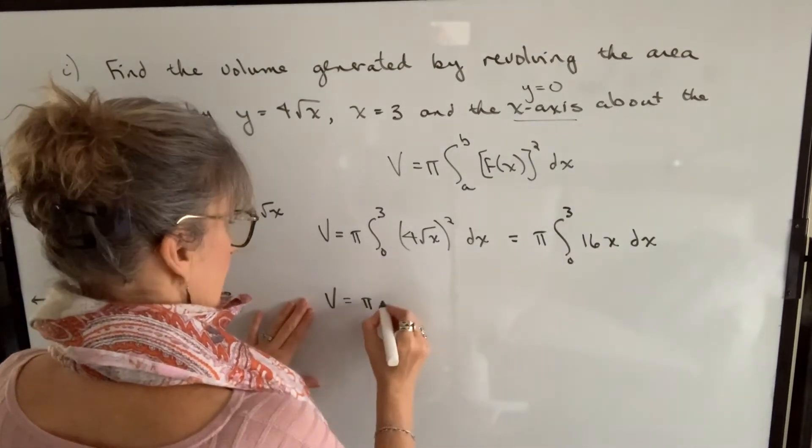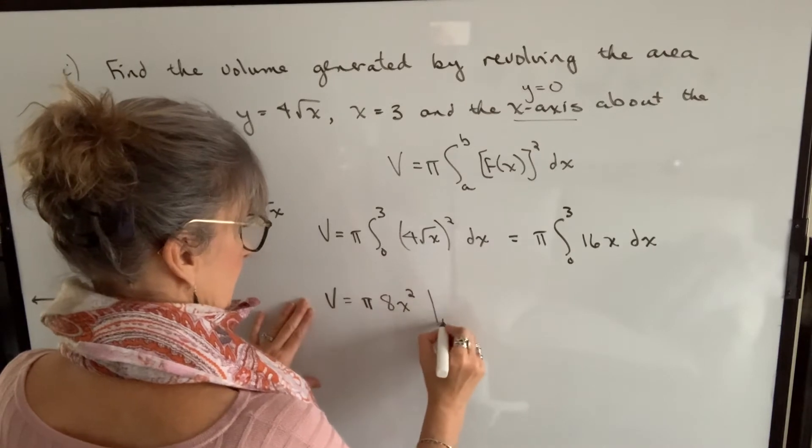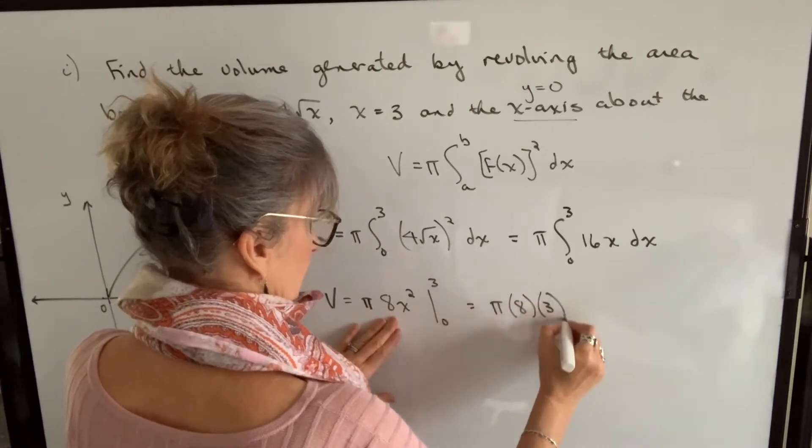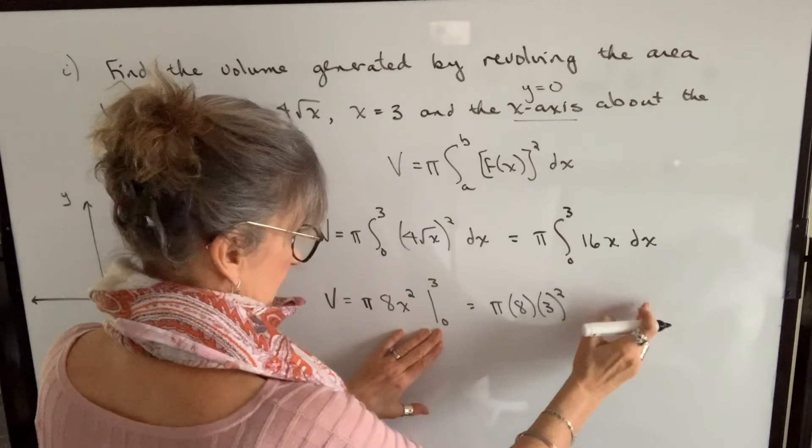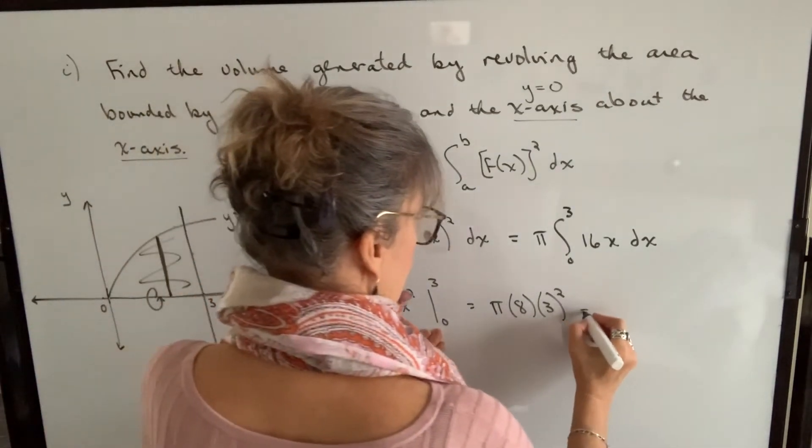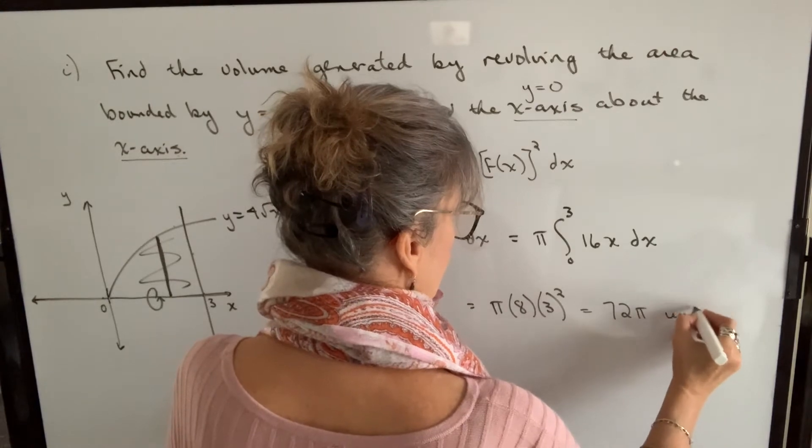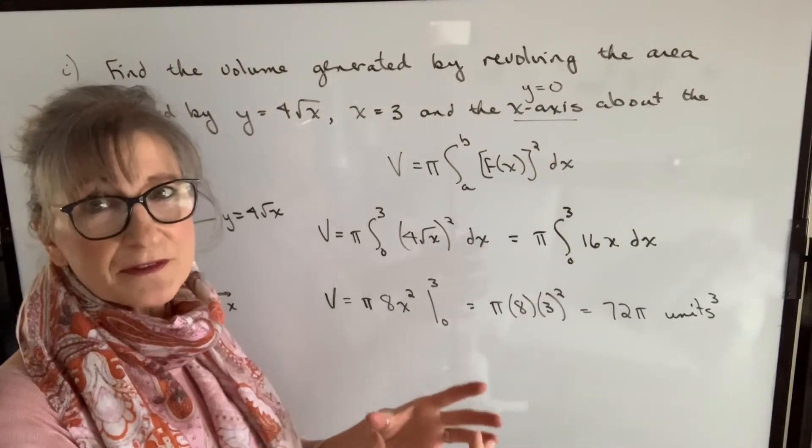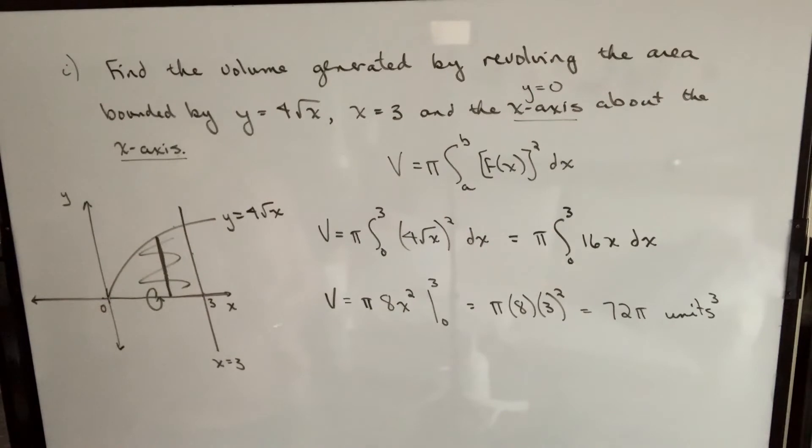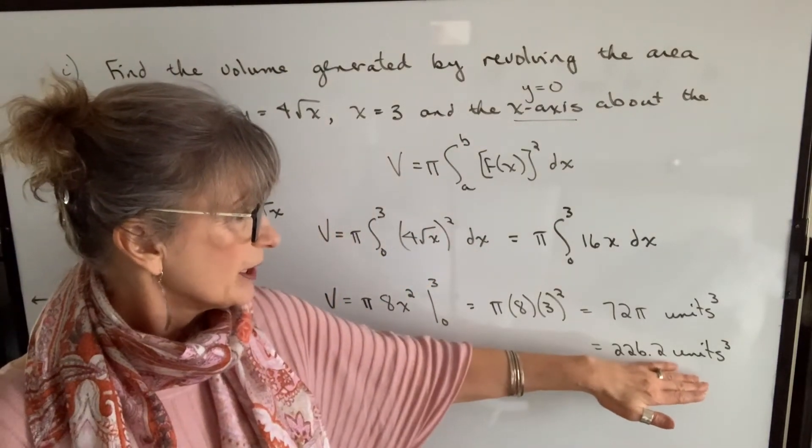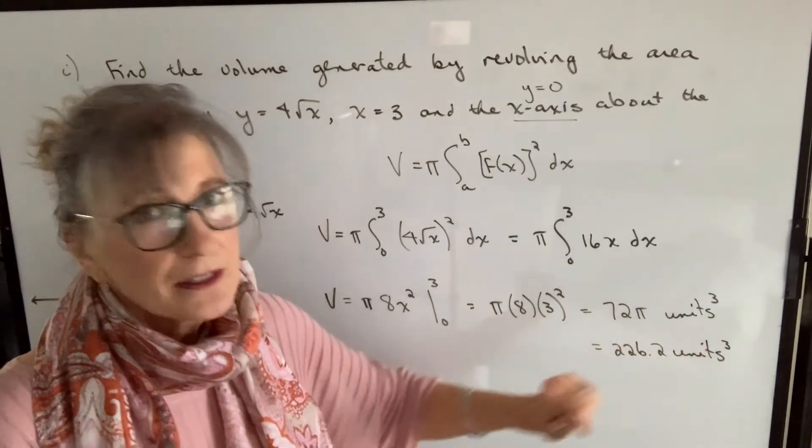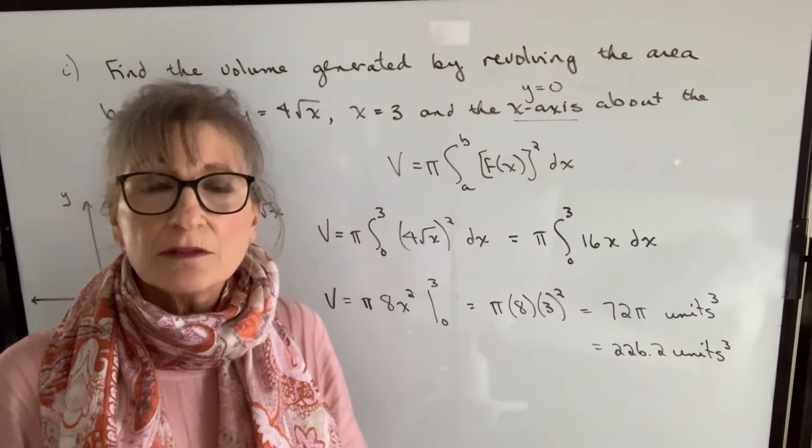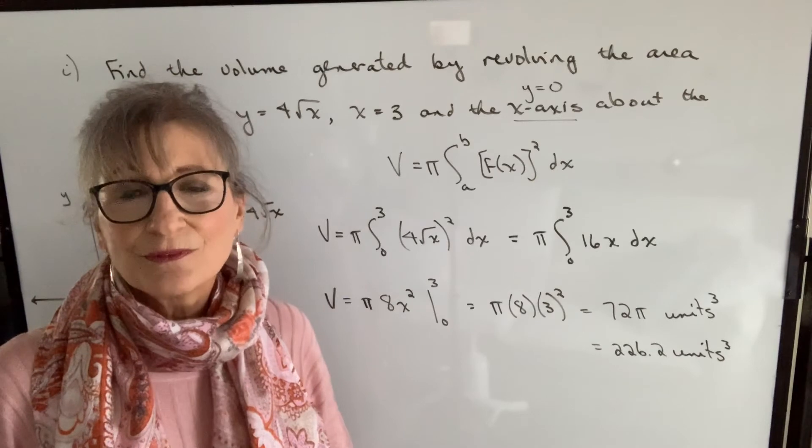The integral of 16x will be 8x squared. And now we evaluate it. And when we put a 0 in, you're subtracting a 0. So this will be 72 pi cubic units. You can leave it exact like that, especially when it's not an application. We're not actually trying to find the volume of something specific. It's just a general question. Or you can express it as a decimal of 226.2 if you multiply 72 times pi. And in either case, I recommend that you put cubic units so that you understand it's a volume you're working with. If you're given the dimensions, then you can put those dimensions in, which we'll do in the next example.